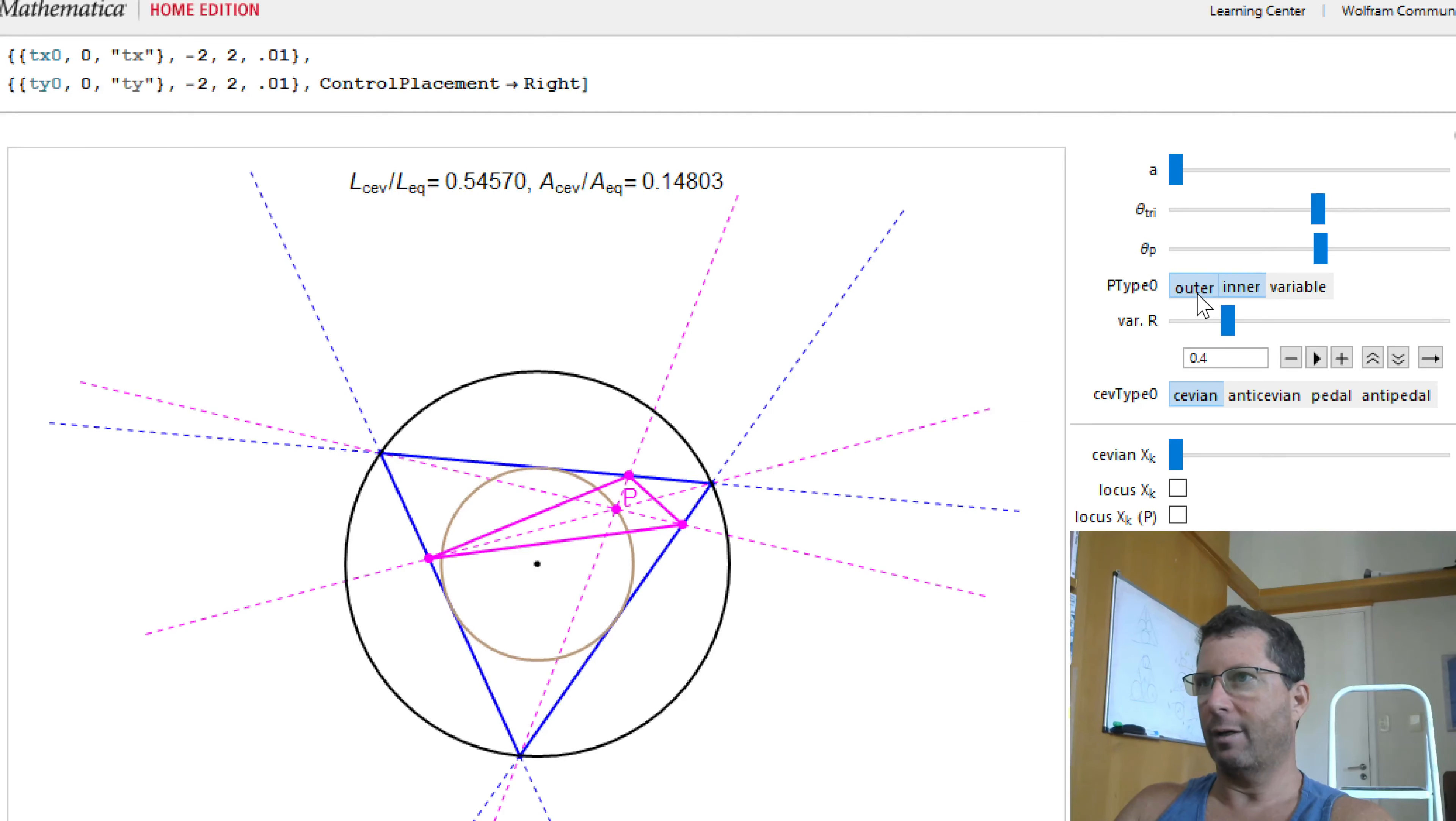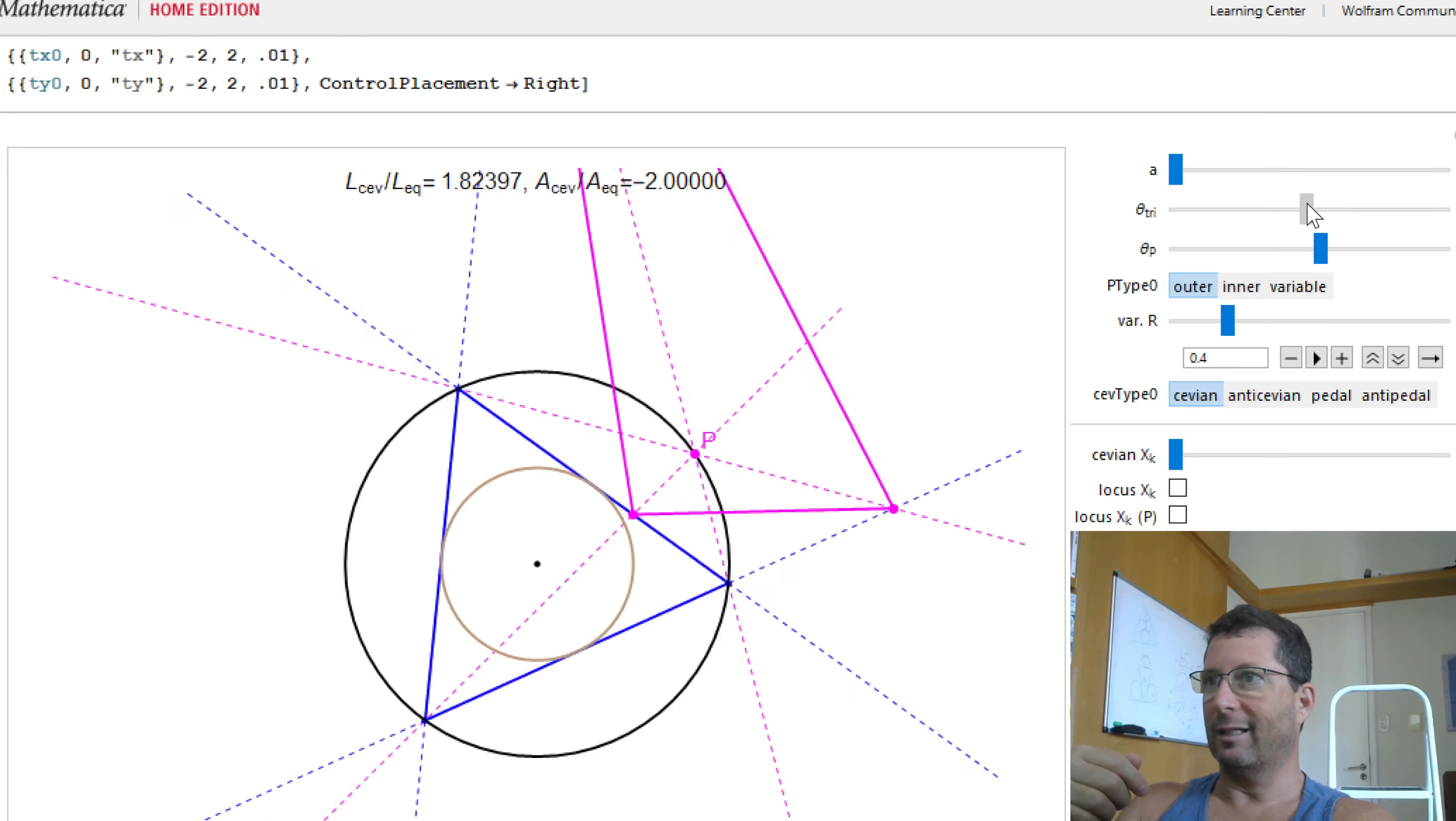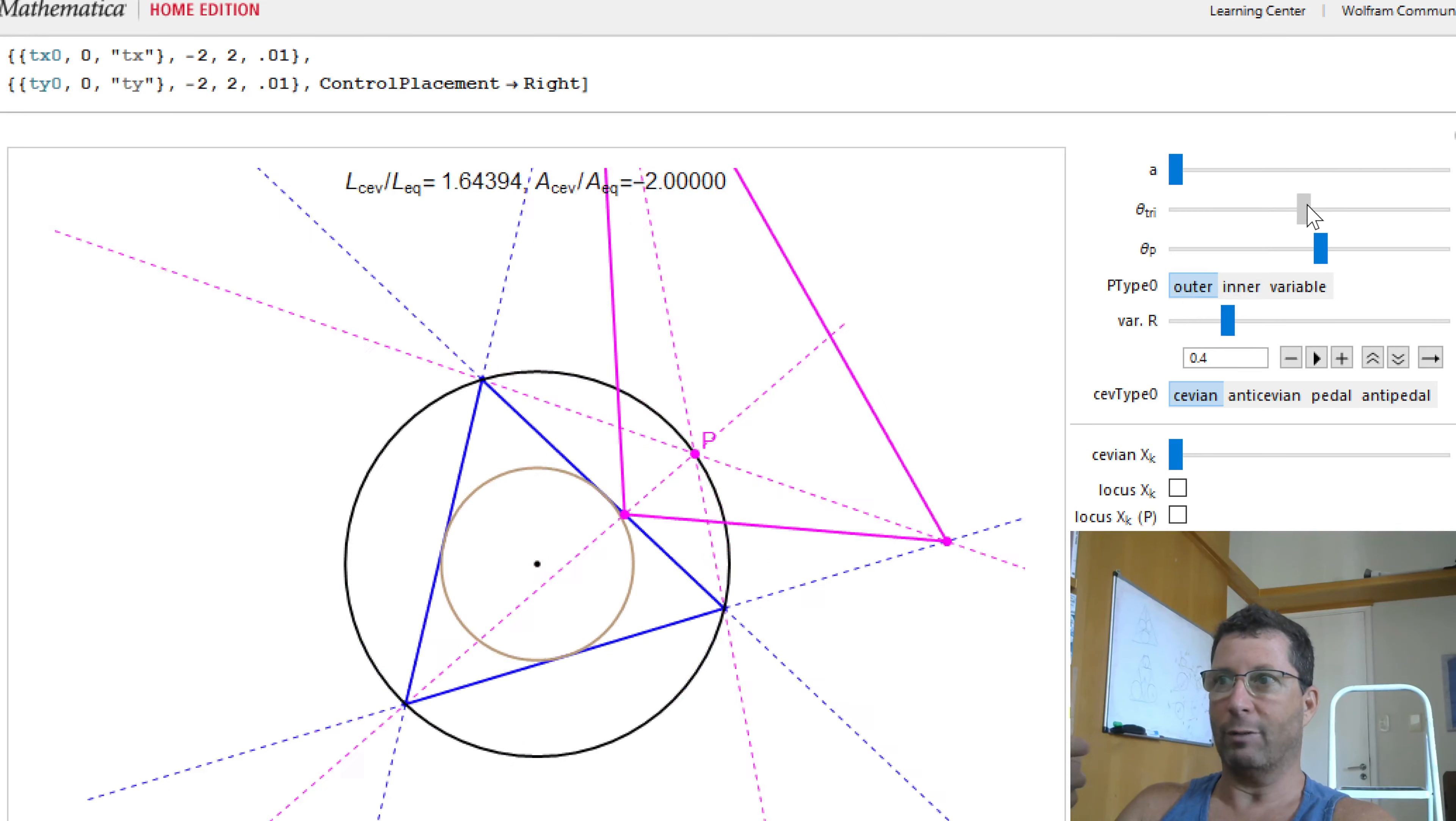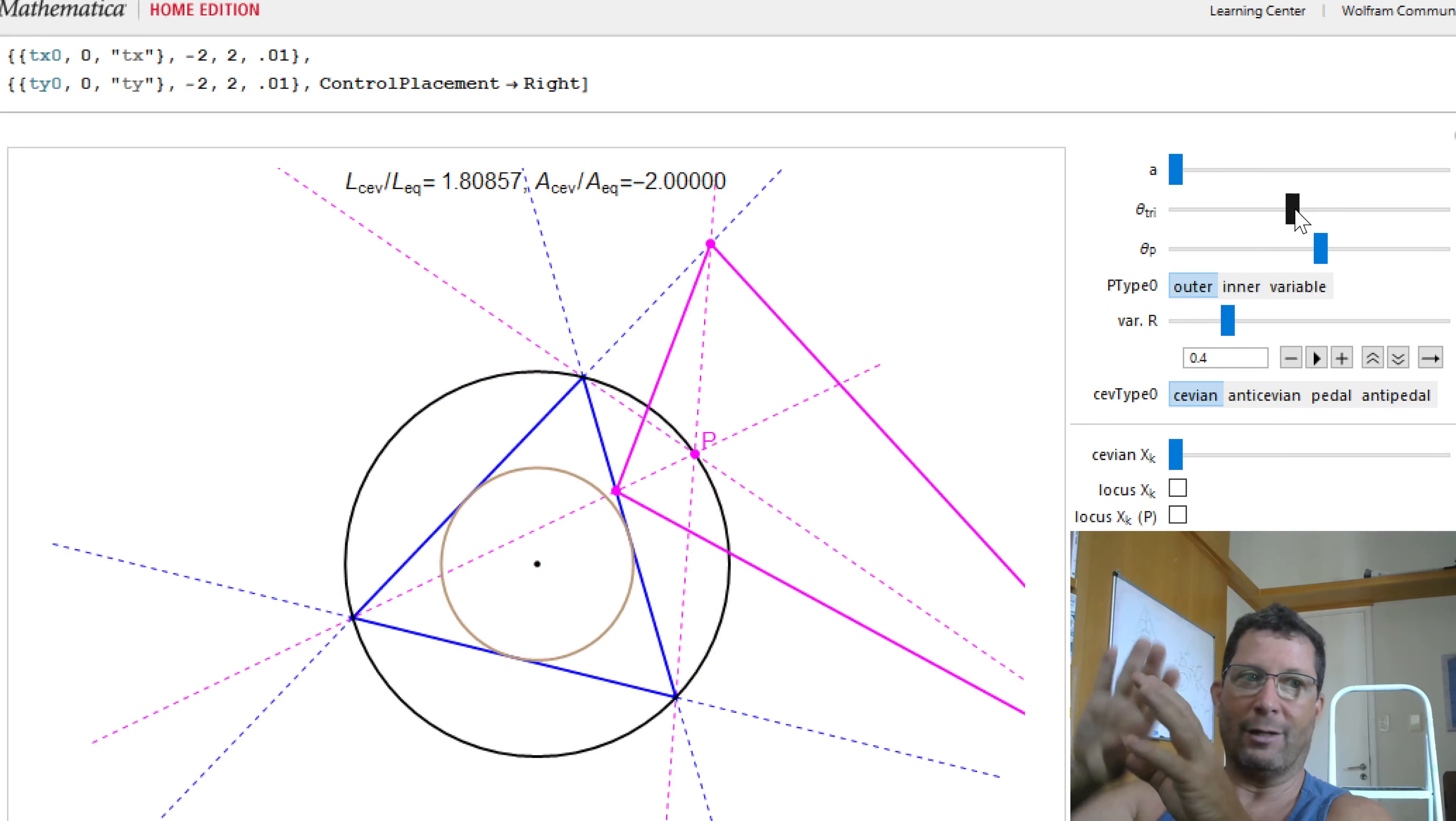Of course, we saw a harder case to actually, at least at first sight, imagine when P is outside. My Cevian now is hanging off of the triangle.